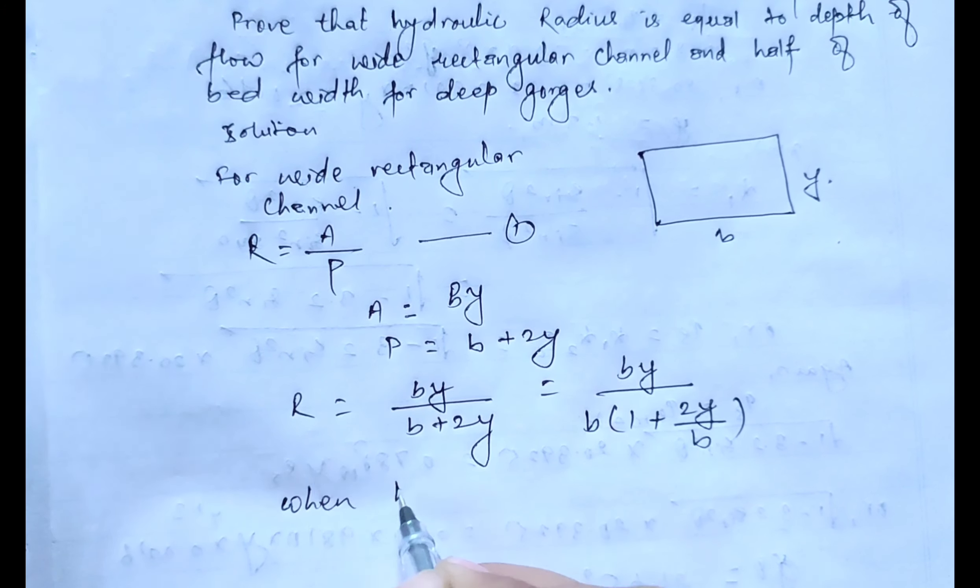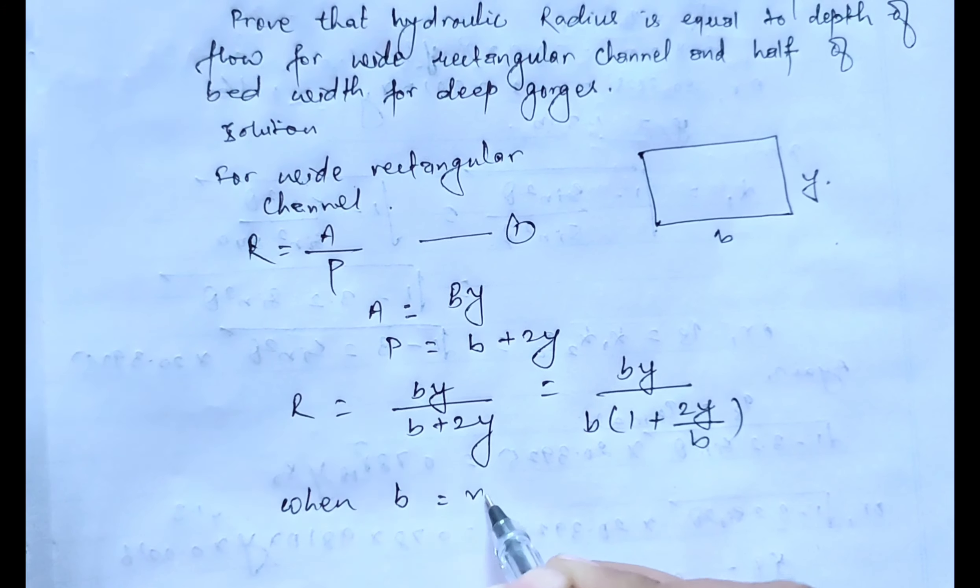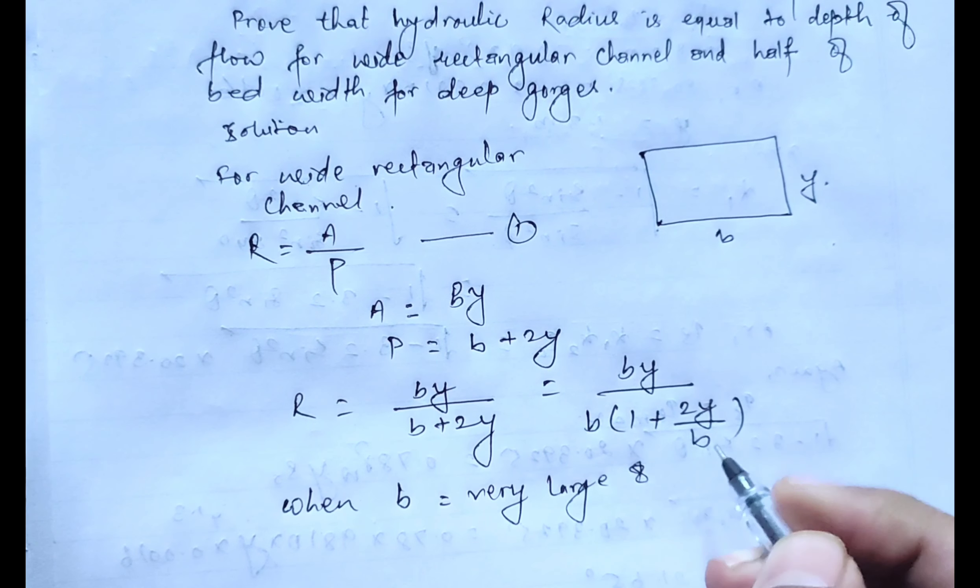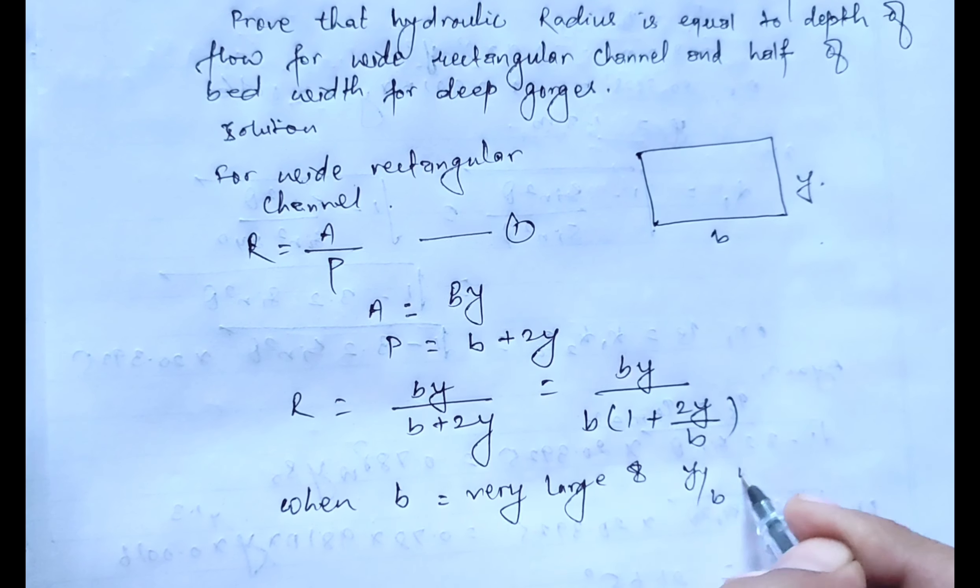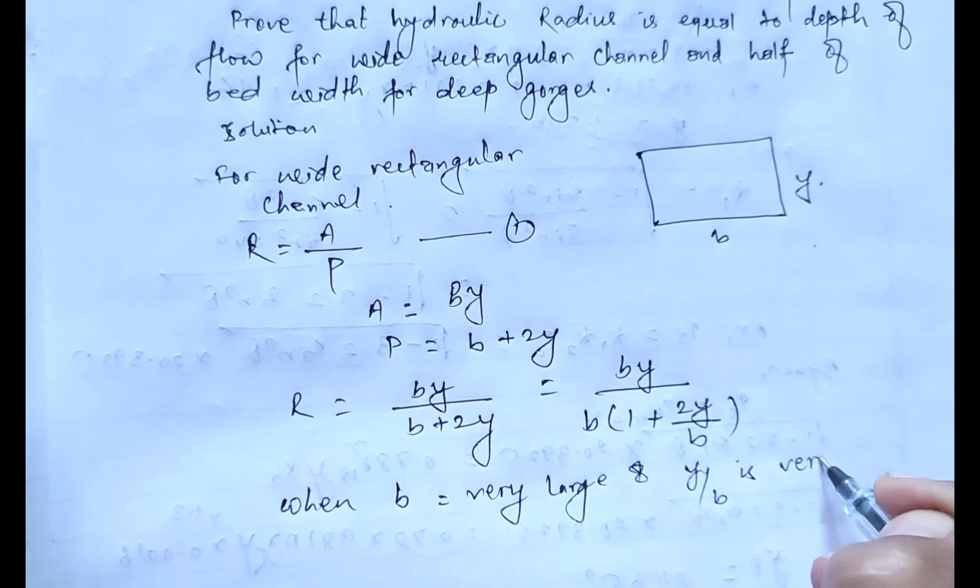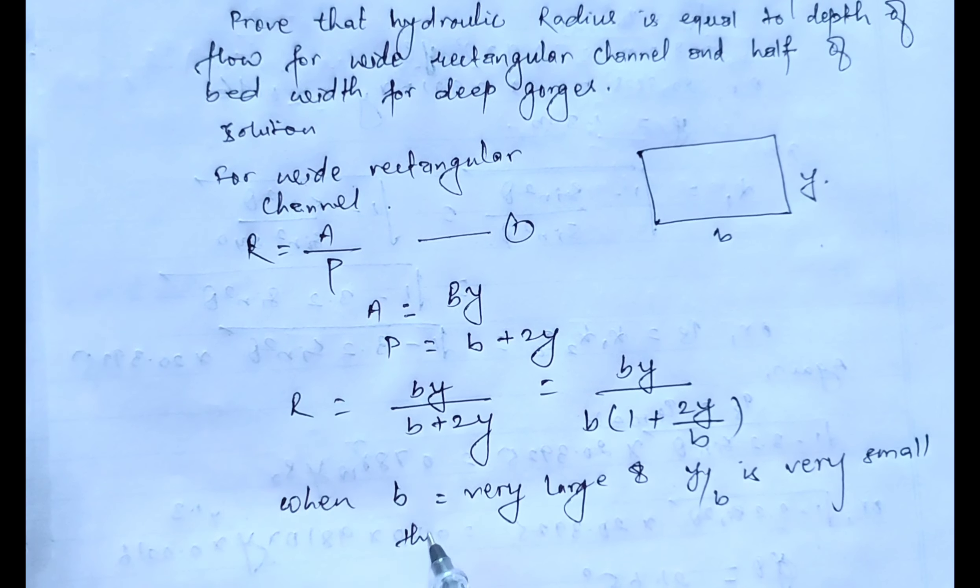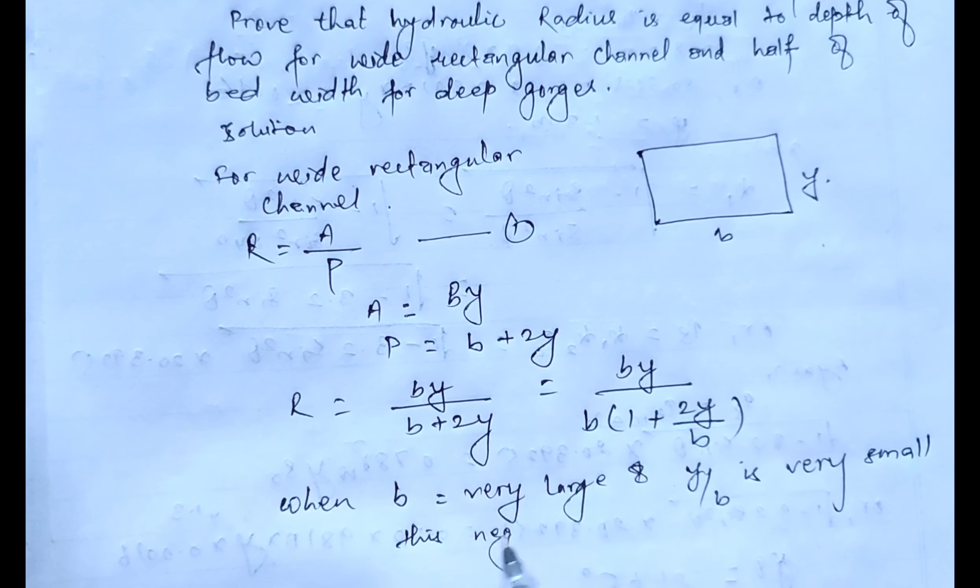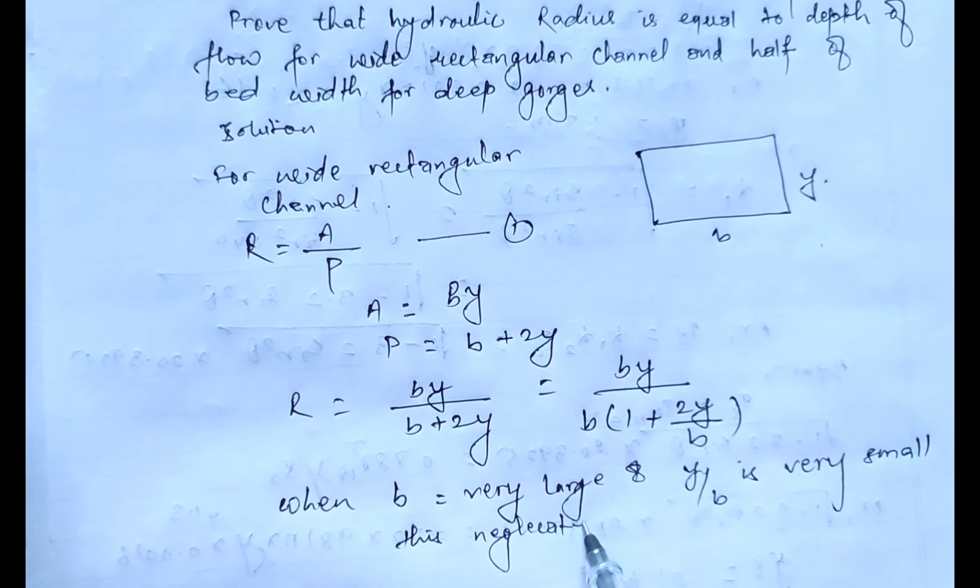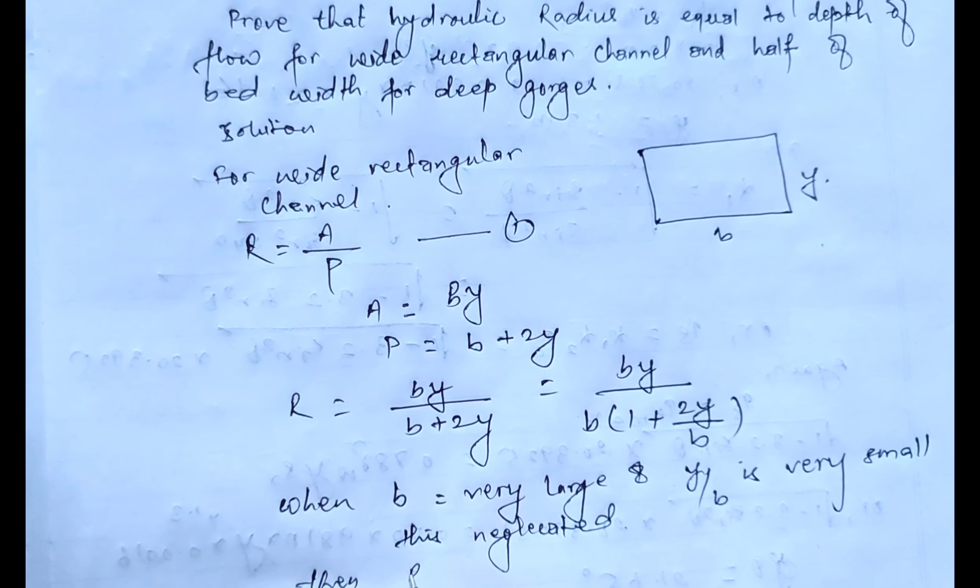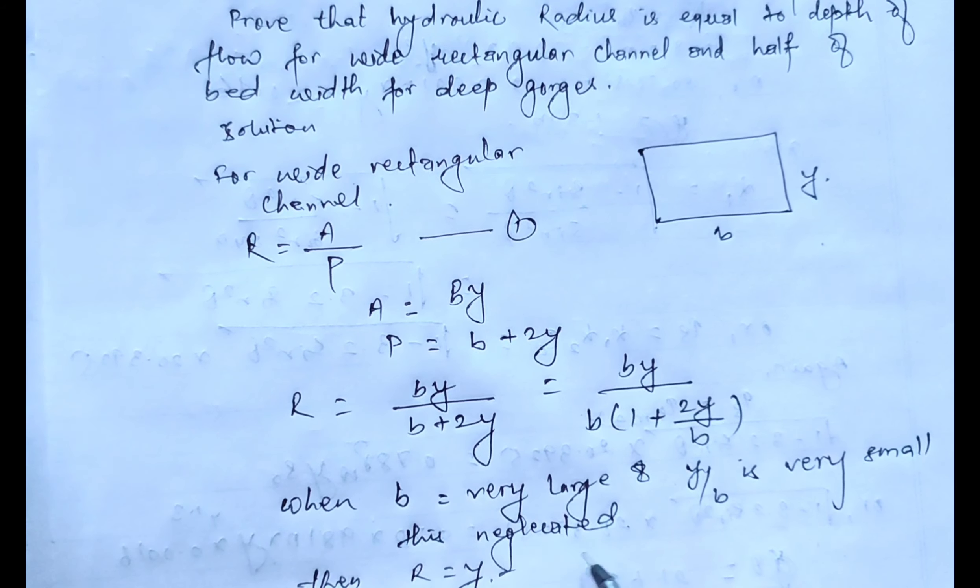When B is very large, in such case this can be neglected. Then the equation form will be R equals Y for wide rectangular channel.